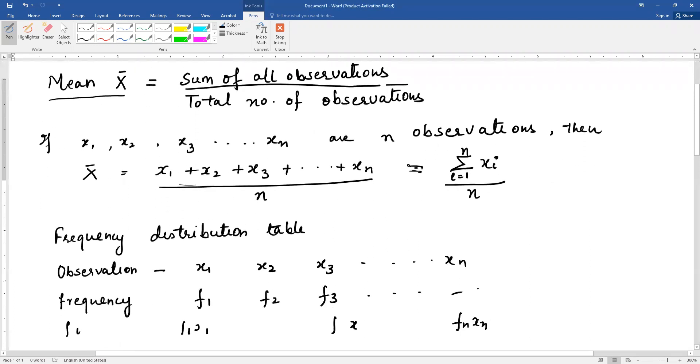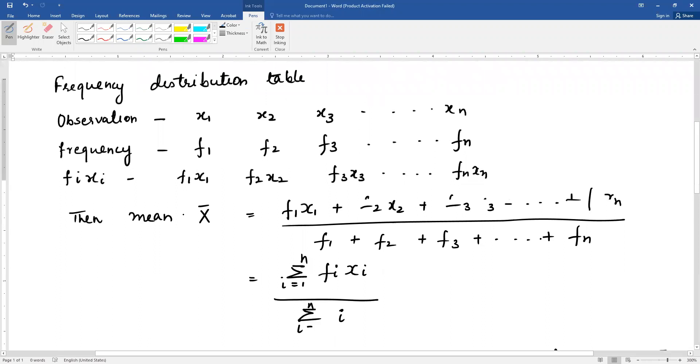If you have a frequency distribution table, there are observations of x1 which is f1 times, x2 f2 times, x3 f3 times, xn fn times.